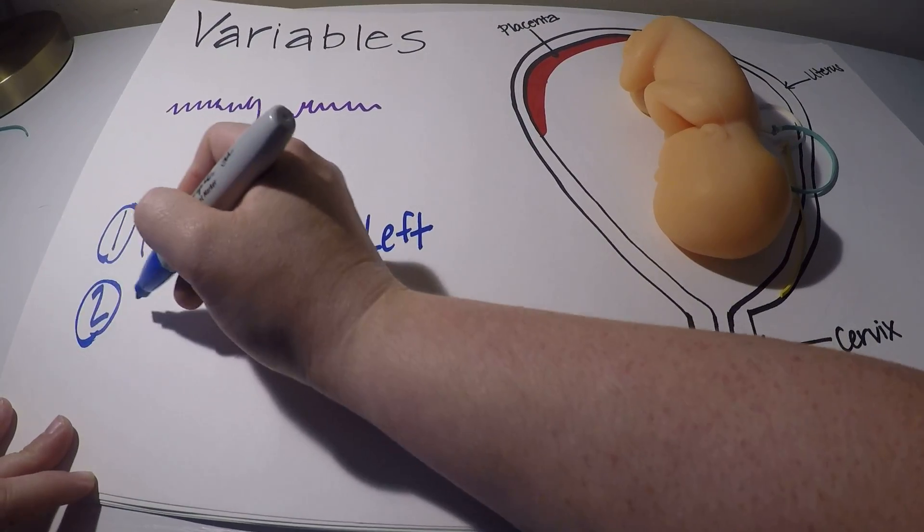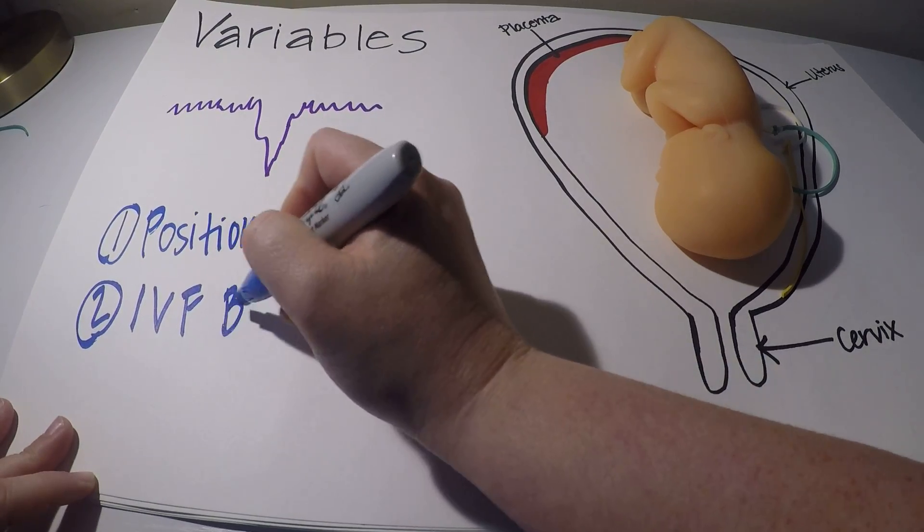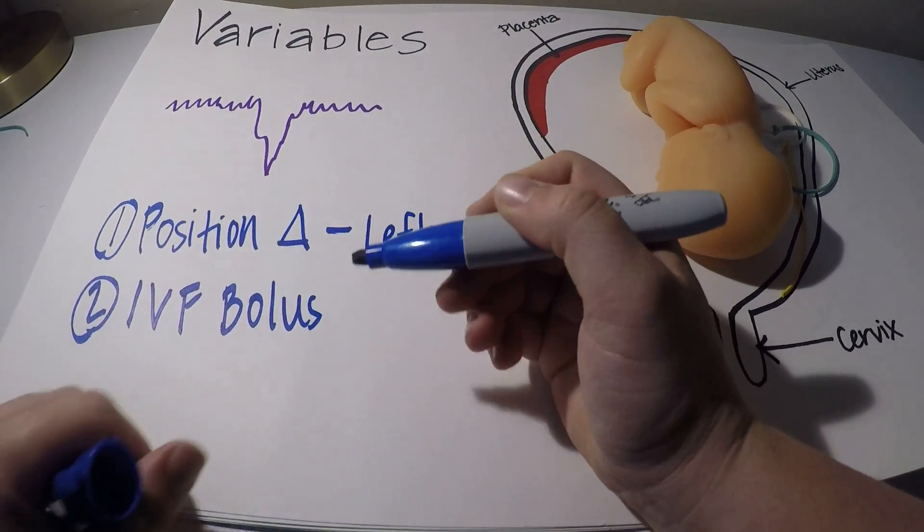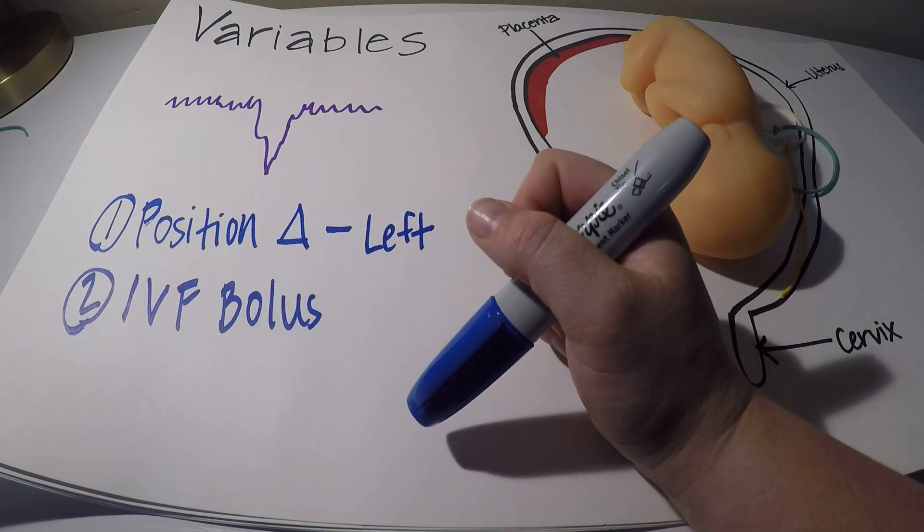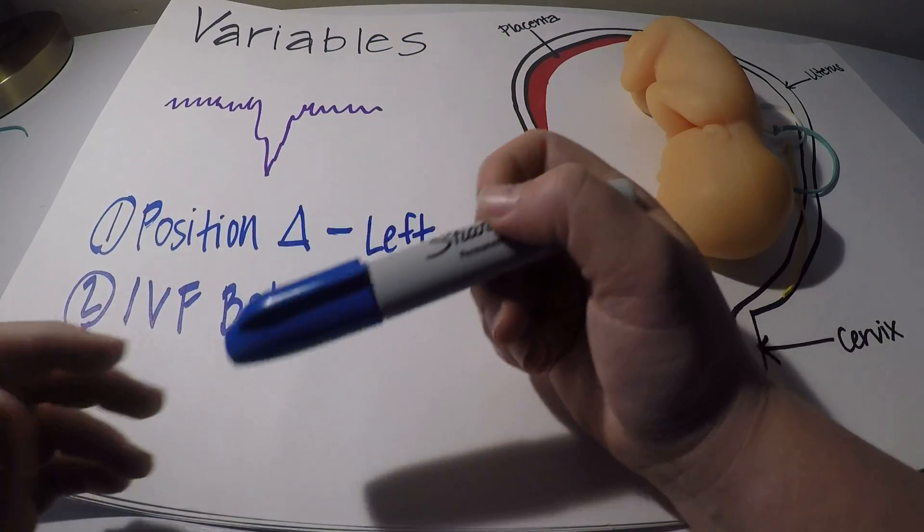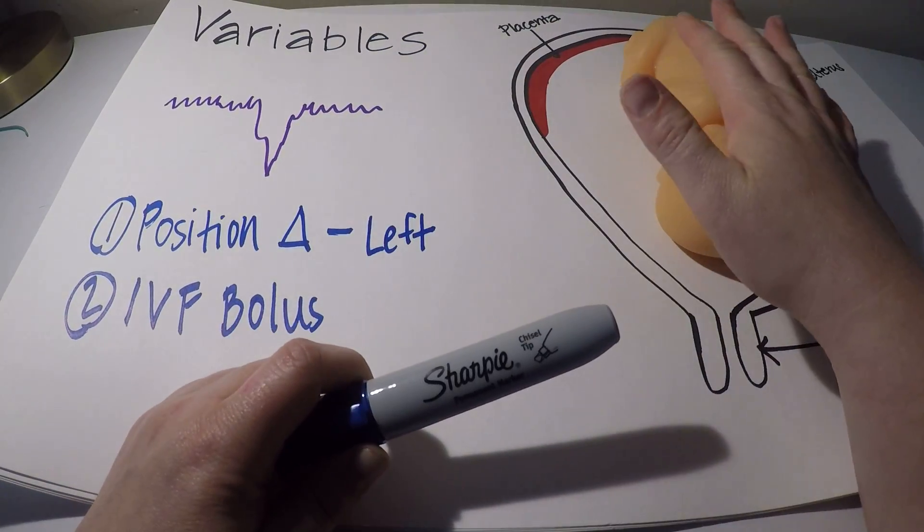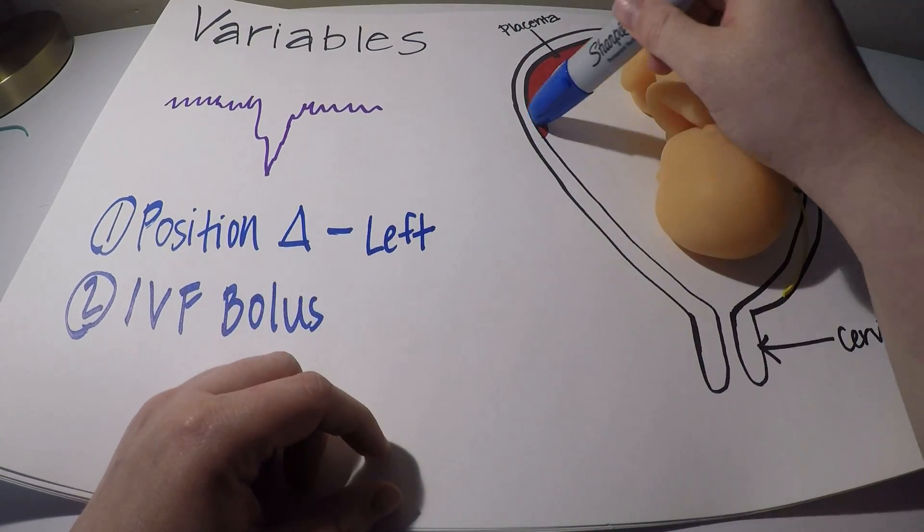The second thing we're going to do is we can give her an IV fluid bolus. And that was really more if these variable decelerations are persistent and the heart rate's dropping pretty low, you know, into the sixties or seventies, we want to give mom some extra fluids because in turn, then we're giving baby some extra fluids. Remember in utero, the placenta takes over the function of oxygenation for the fetus.